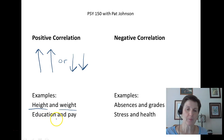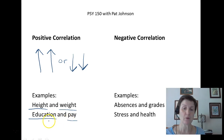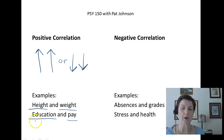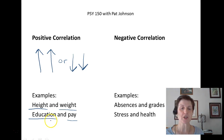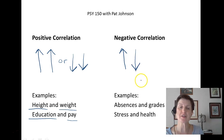Another example of a positive correlation is education and pay. Many of you are enrolled in this class to obtain higher education so that you can get a better job, so as education goes up, pay goes up. Some of you may know educated people who aren't well paid, or highly paid people without much education — and those statements are true — but in general, as education goes up, pay goes up.